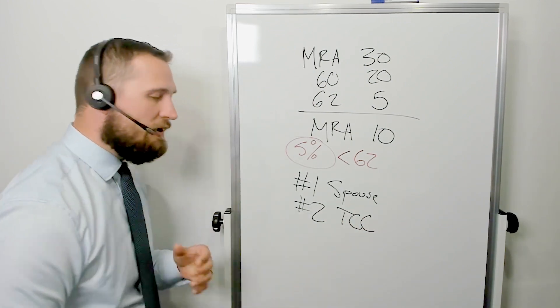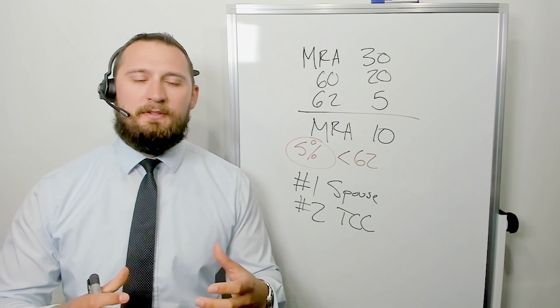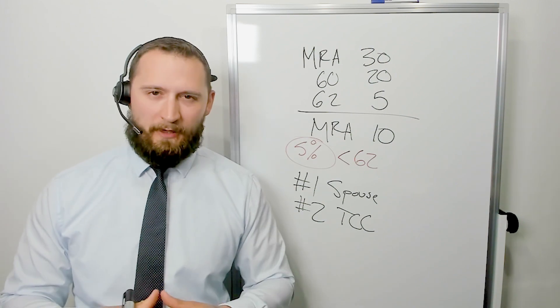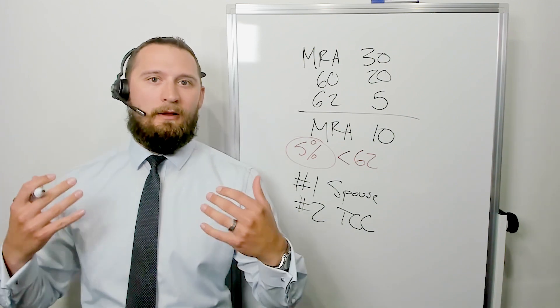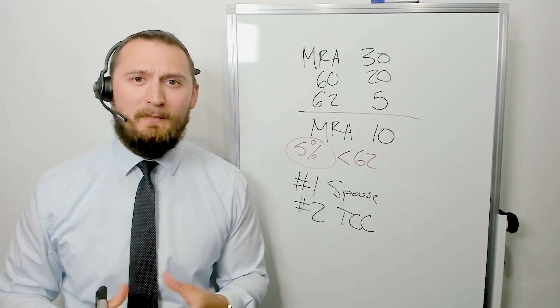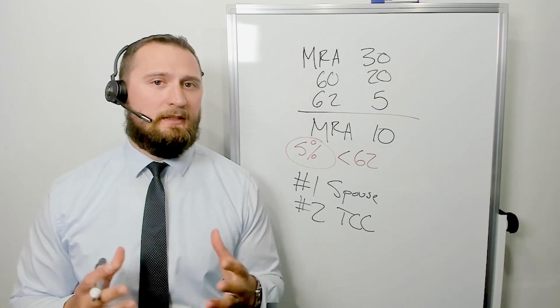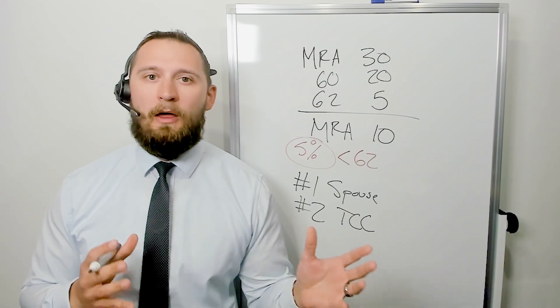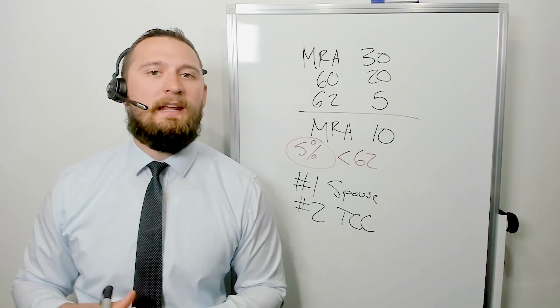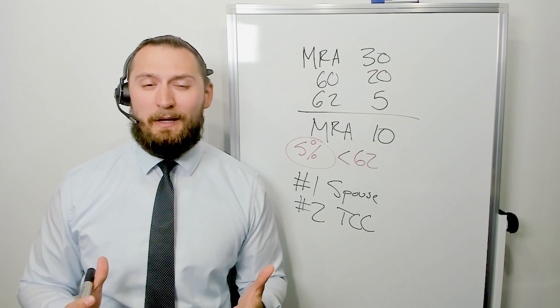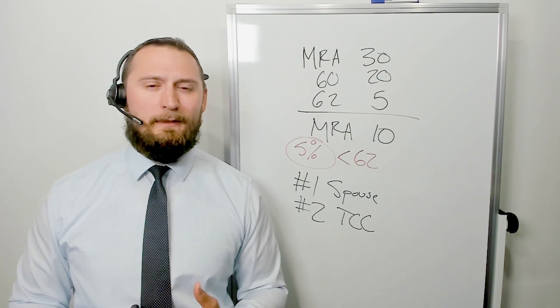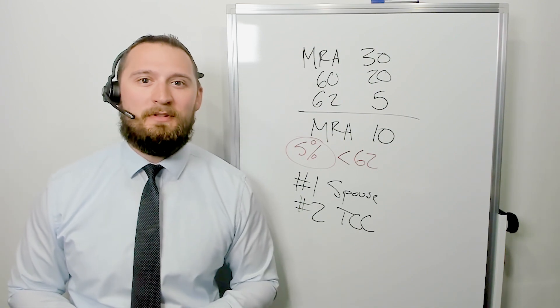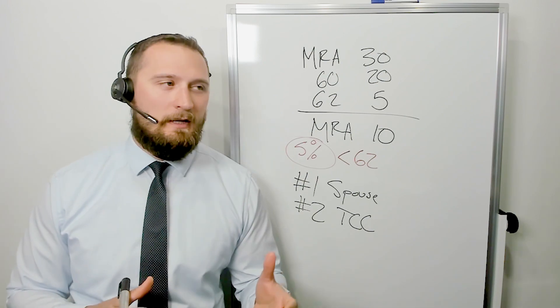So option number two would be to do TCC, temporary continuation of coverage. This is often referred to as like Cobra coverage outside of the FEHB space. And what this says is we get to keep our health insurance for 18 months. Usually there's some other exceptions to that where it could be a little bit longer than 18 months. However, it comes with a pretty hefty cost.